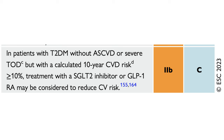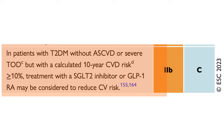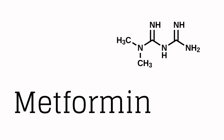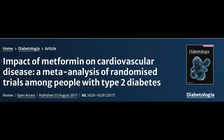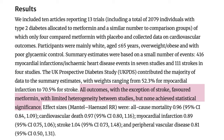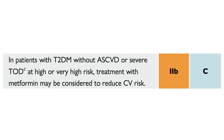In patients with type 2 diabetes without atherosclerotic disease or severe target organ damage, but with a calculated 10-year risk of cardiovascular events more than 10%, SGLT2 inhibitors or GLP-1 receptor agonists are still considered to reduce cardiovascular risk, but with a weaker recommendation. Metformin was the preferred initial option for decades, but a meta-analysis of 13 trials on its cardiovascular effects — including the UKPDS — showed cardiovascular outcomes were not significantly better. Metformin has therefore dropped from the top spot, but may still be an option for patients at low or moderate cardiovascular risk.